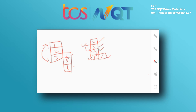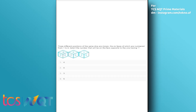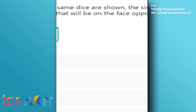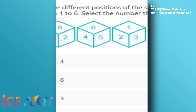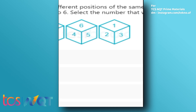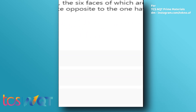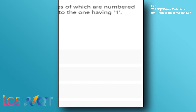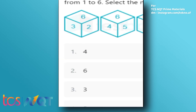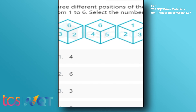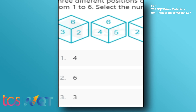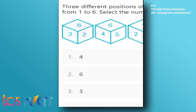Let's go to the actual problem which has been asked in the exam earlier. I hope you will pause the video and solve the problem first. The problem statement is: select the number that will be on the face opposite to the one having one. You have to pick the value which is opposite to one. You have been given three cubes, but as I said, just pick the two cubes in which a common value is present. As you can see in cube one and two, the common value six is present.